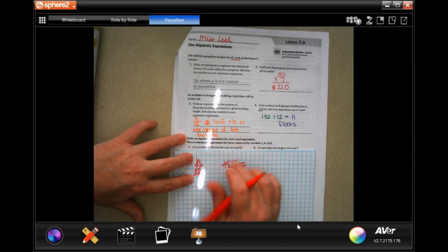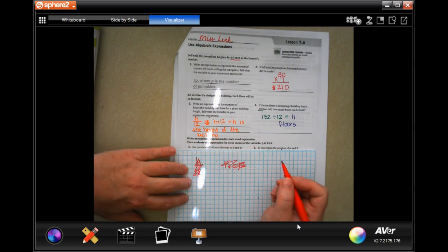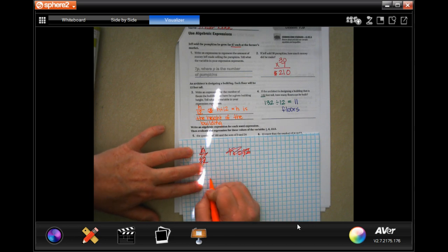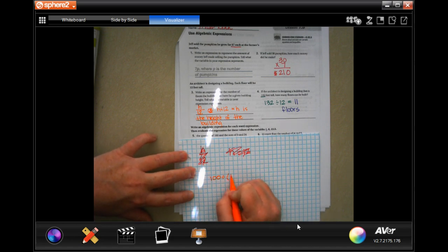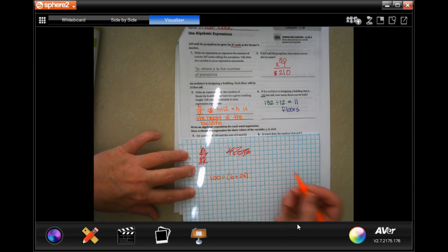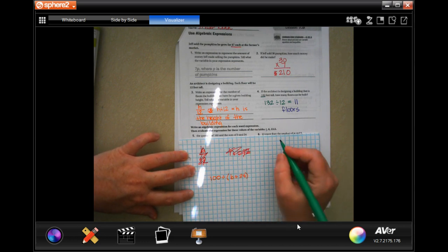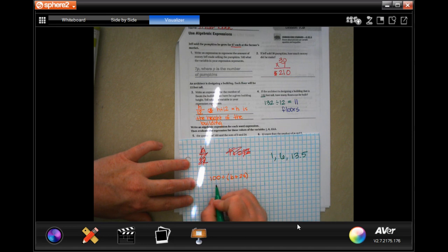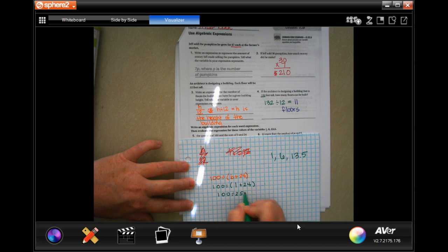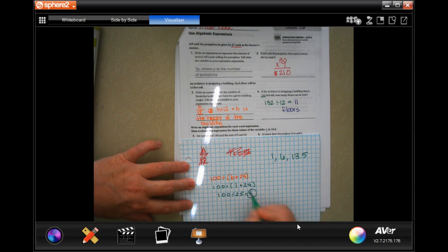So, the quotient of 100 and the sum of B and 24. Well, quotient of 100 and B and 24. So, now, I'm going to go ahead and I'm going to fill in, I have 1, I have 6, and I have 13.5 that I need to fill in wherever B is. So, first, I have 100 divided by 1 plus 24. Well, 1 plus 24 is 25, so then I have 100 divided by 25, and I know that that is 4. So, 4 is my first one.